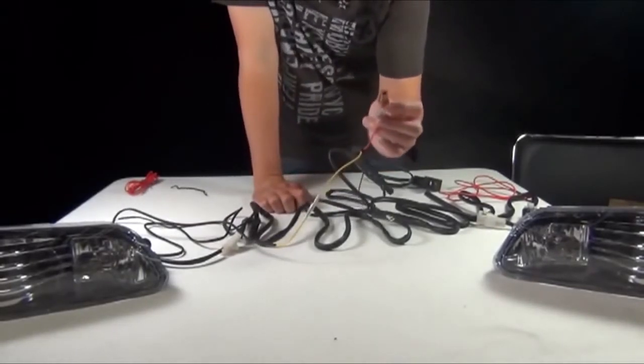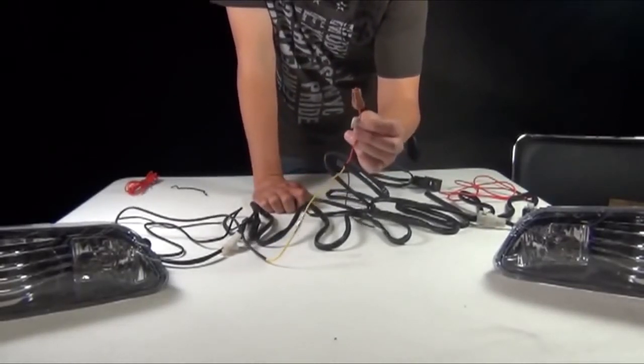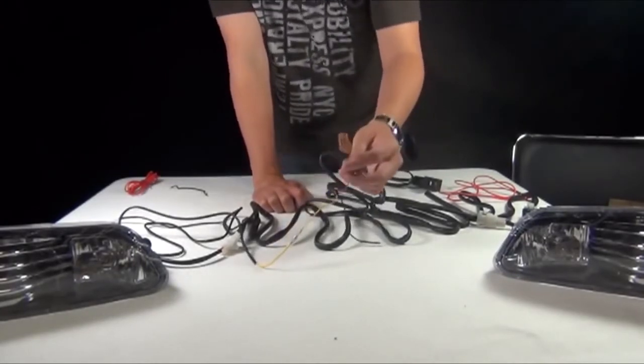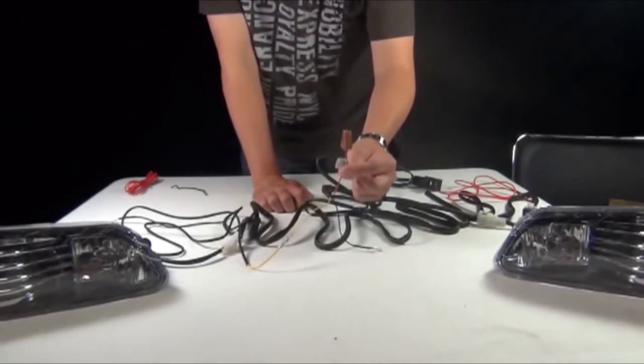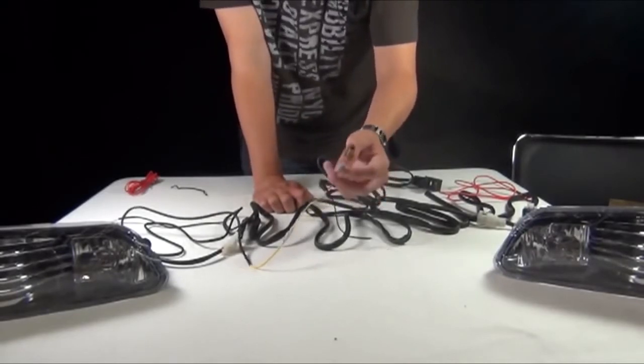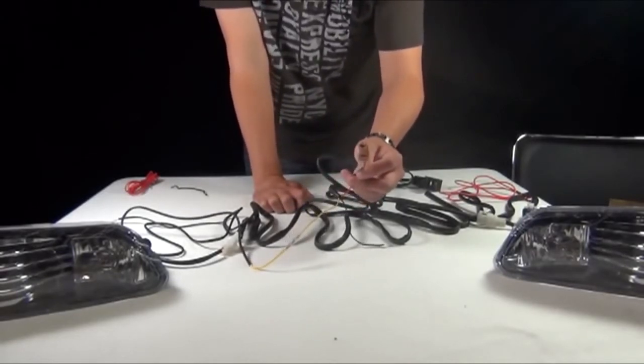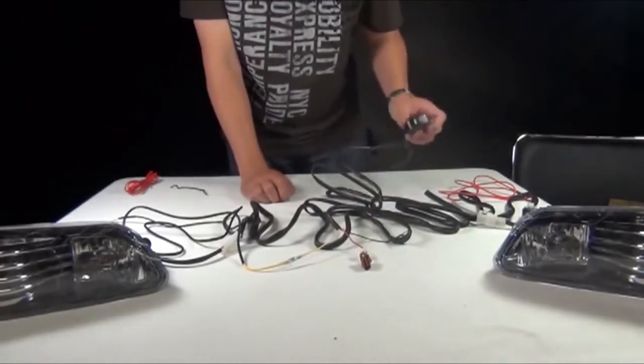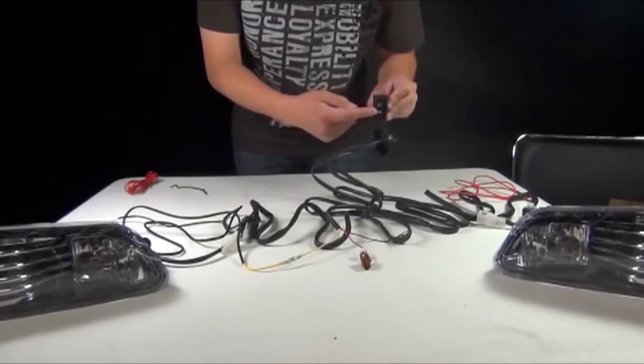Tap it into the ignition plugs or tap it to a power source. Now if you tap this into a power source, then every time you turn off your car, your fog light might stay on if you forget to turn it off from the switch.